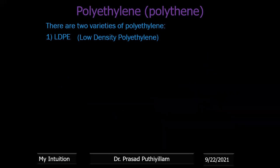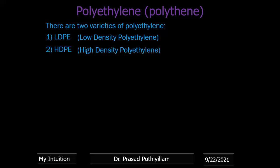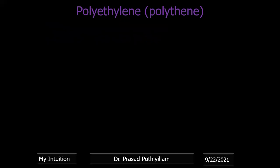LDPE is a cross-linked structure, meaning that in a given volume fewer carbon or hydrogen atoms are present — therefore we call it low density. The second type is HDPE, high density polyethylene. HDPE is usually a linear structure, so more polyethylene molecules can be packed in a given volume — therefore it is high density.